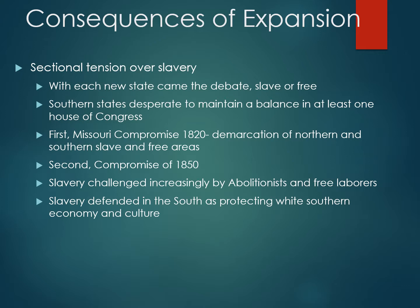With each new state from these western territories, there would be a debate over whether or not the state would be slave or free. Throughout the mid-century period, Southern states sought to maintain a balance in which there was no complete majority over slave states in Congress. In particular, the Senate by the 1850s was the key for the Southern states because every state has two senators. Southerners believed that if they could maintain a balance of Southern slave states versus Northern states, they could always act to prevent any kind of action that could end the continuation of the slave system in Southern states.